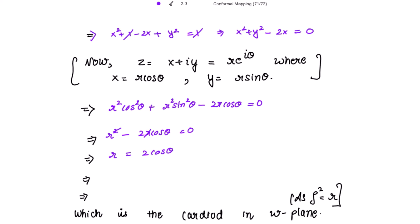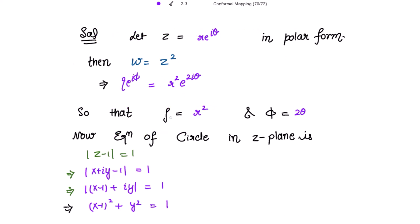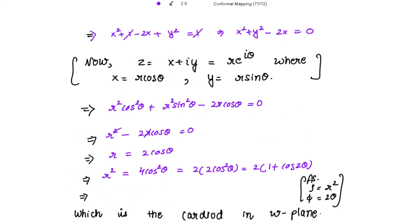Squaring both sides: r² = 4cos²θ. This can be written as r² = 2(2cos²θ). Using the formula 2cos²θ = 1 + cos(2θ), we get r² = 2(1 + cos2θ). Since ρ = r² and φ = 2θ, substituting gives ρ = 2(1 + cosφ), which is the required cardioid in the w-plane.